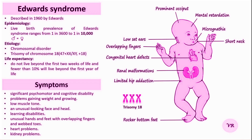Edwards Syndrome is caused by a random error in cell division during the formation of eggs or sperm, leading to the presence of an extra chromosome 18. This extra chromosome can be partial or full. Advanced maternal age over 35 years increases the risk of having a child with Edwards Syndrome due to non-disjunction of chromosomes during meiosis.